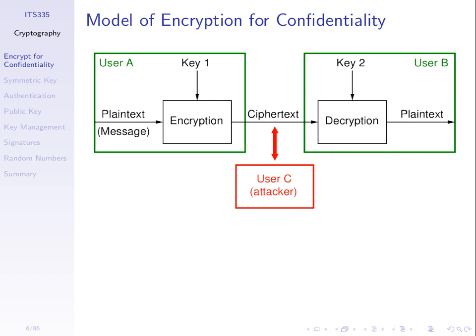Before we send the plain text we encrypt it. We apply an encryption algorithm or a cipher, which takes as input the plain text and a key to encrypt. The output of that algorithm is what we call the cipher text, and it's the cipher text that A sends to B. The encryption algorithm will be chosen such that there's a corresponding decryption algorithm where, when user B receives the cipher text and applies the decryption algorithm using a key, it produces the original plain text as output.